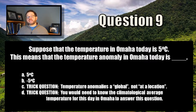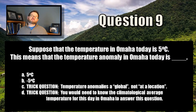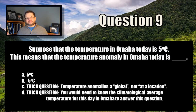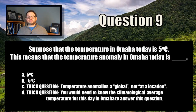So if the temperature today in Omaha is 5 degrees Celsius and the average temperature on this day in Omaha is 10 degrees Celsius, then the temperature anomaly right now is negative 5.